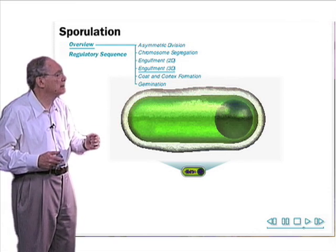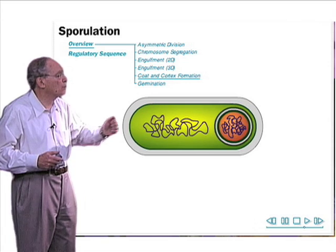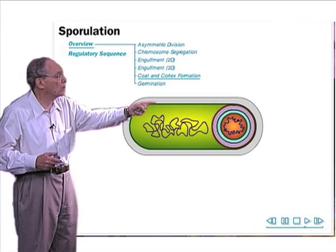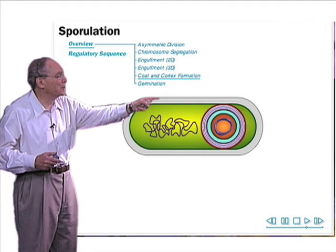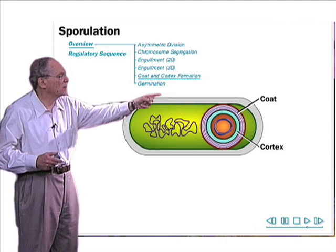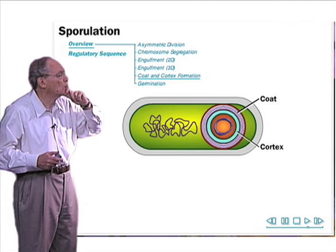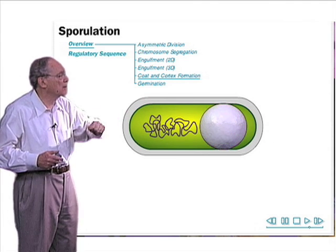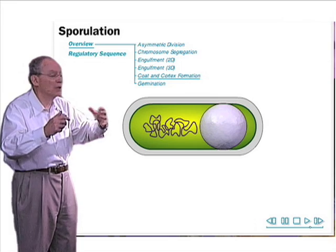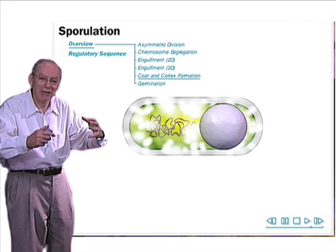This next cartoon illustrates these processes. So you'll see the four-spore chromosome being remodeled into a donut. The white area is the cortex, and a thick protein shell of coat proteins is created on the outside. This then matures into a spore, a golf ball-like spore.